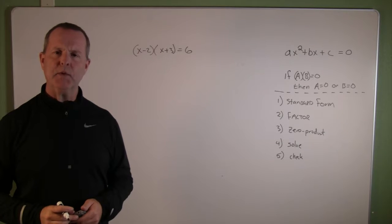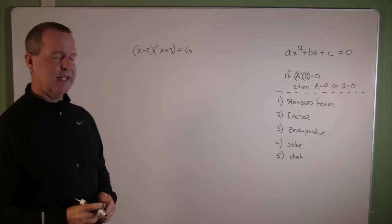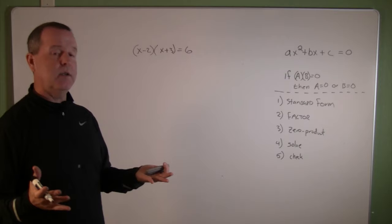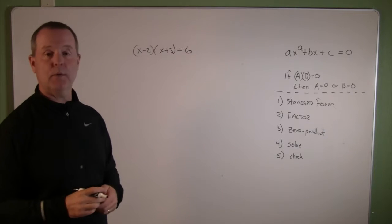What do we do with this one? (x-2)(x+3) = 6.